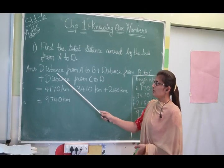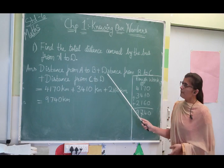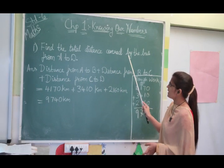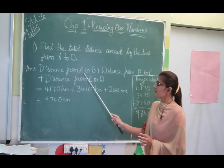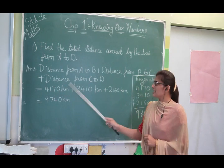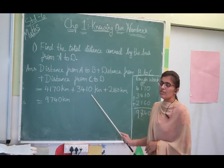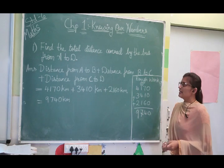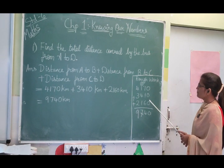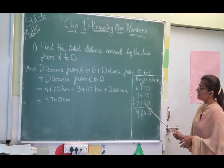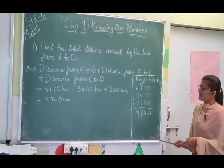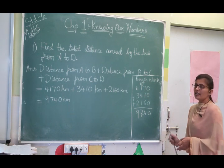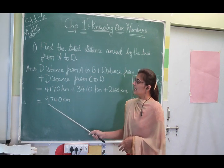The solution: Total distance from A to D = Distance A to B + Distance B to C + Distance C to D = 4,170 + 3,410 + 2,160 km. Adding: 0+0+0 = 0; 7+1+6 = 14, write 4 carry 1; 1+4+1+1 = 7; 4+3+2 = 9. Therefore the total distance from A to D = 9,740 kilometers.